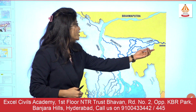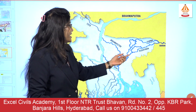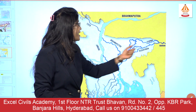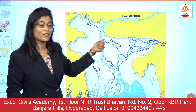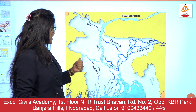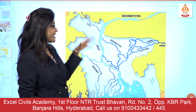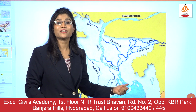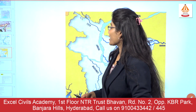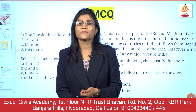The two distributaries of the Barak are Kushiyara and Surma. Combined with the Brahmaputra, Tista, and the Ganga, together they are all known as the Meghna and together they form the Gangetic delta. It's a very interesting fact to learn about river Barak.